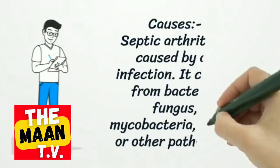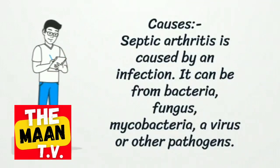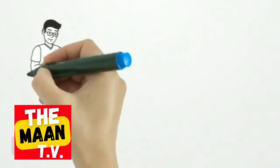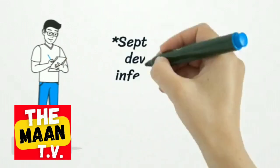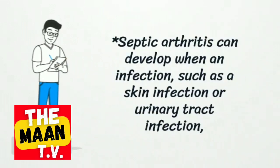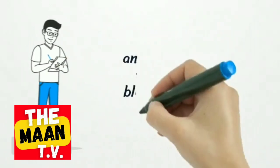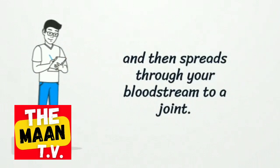Septic arthritis is caused by an infection. It can be from bacteria, fungus, mycobacteria, a virus, or other pathogens. Septic arthritis can develop when an infection, such as a skin infection or urinary tract infection, spreads through your bloodstream to a joint.